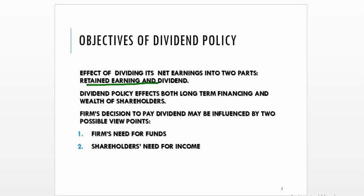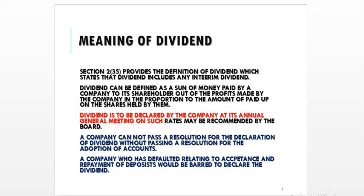While framing the dividend policy, the organization has to see how much funds the firm requires for future growth and what are the desires and preferences of the shareholders. Section 235 provides the definition of dividend, which states that dividend includes any interim dividend. Dividend can be defined as a sum of money paid by a company to its shareholders out of the profits made by the company, in proportion to the amount paid up on the shares held by the shareholder. Dividend has to be declared by the company at the Annual General Meeting on such rate as may be recommended by the board.